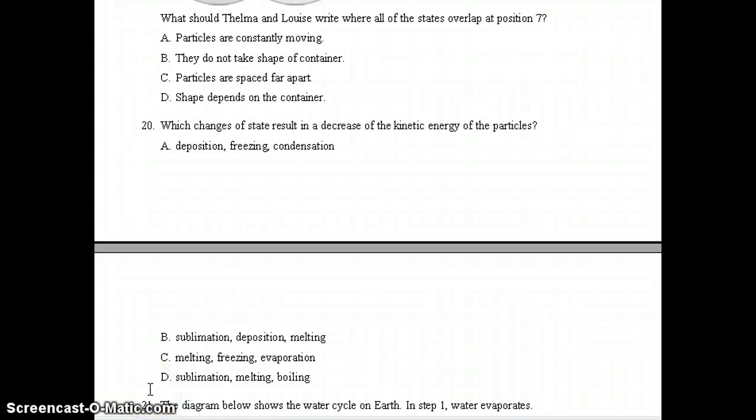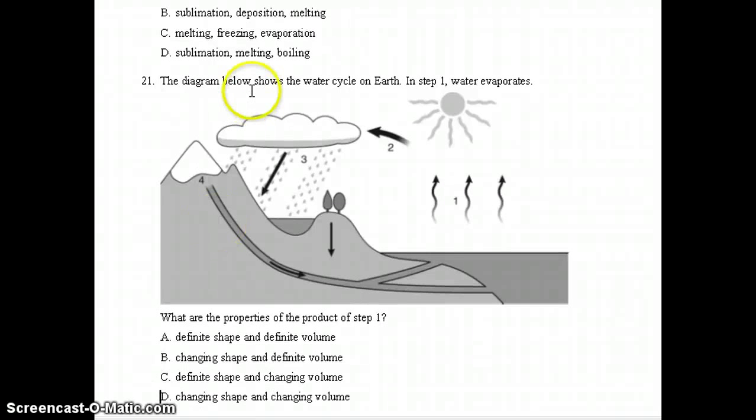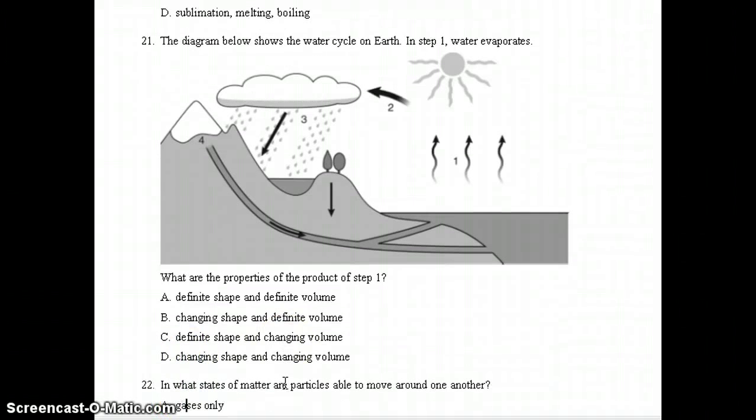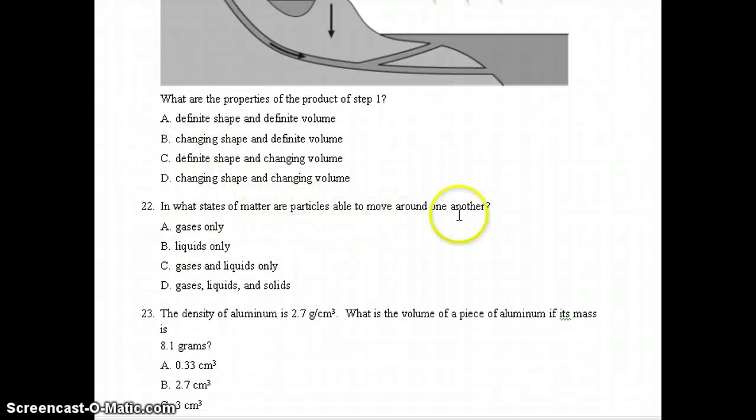Number 21, it says the diagram below shows the water cycle on Earth. In step 1, water evaporates. Step 1, what are the properties of this product of step 1? And if it's evaporating, it's changing from a liquid to a gas. So the properties would be D, changing shape and changing volume. Number 22, asks, in what states of matter are particles able to move around one another? And they can move around one another in letter C, gases and liquids only.